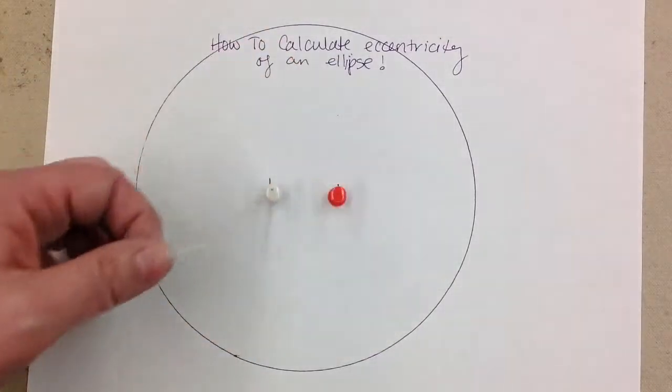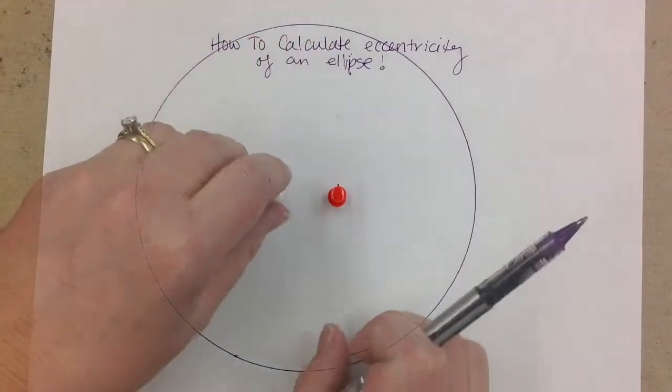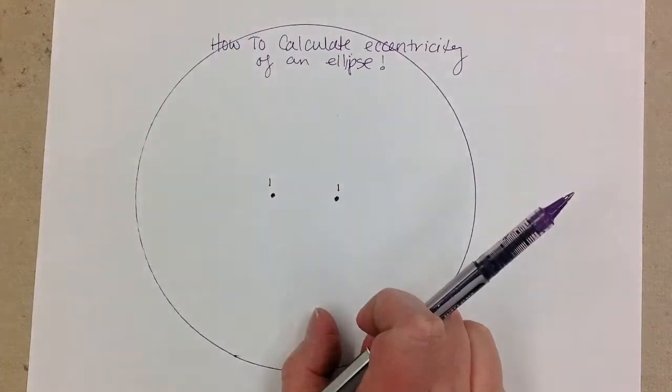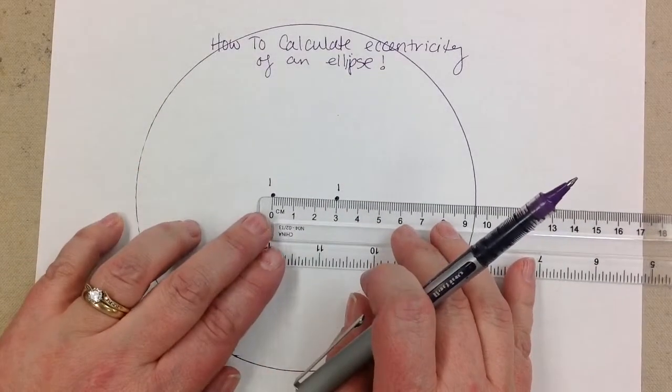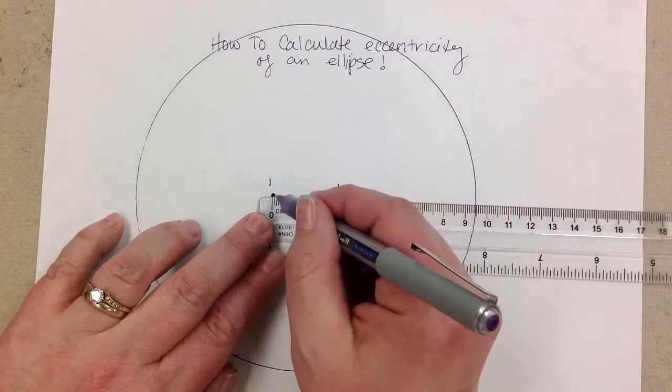What I'm trying to show you here is how to actually draw an ellipse and calculate the eccentricity. The first thing that I did was put the pins in the foci, put the string around, put the pen in, and draw my ellipse.